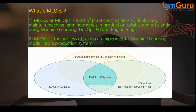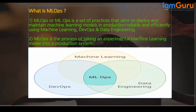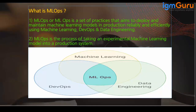Usually the operations team may not have knowledge about machine learning. At the same time, data engineering may not either. As a data scientist, I used to focus only on developing the model, tuning the model, and trying to improve model results through hyperparameter tuning — improving performance and accuracy — because I don't have DevOps knowledge.